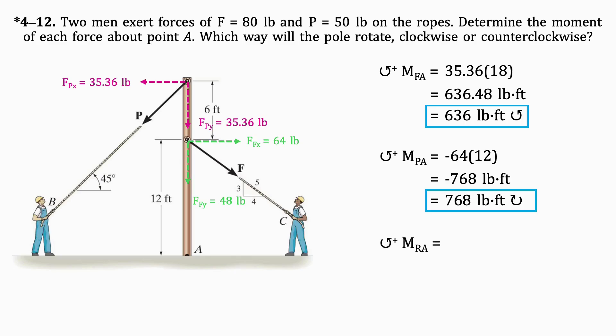Finally, to get the resultant moment, we just add the two moments together. By doing so, we get 132 pounds per foot in the clockwise direction, so the pole will rotate clockwise.